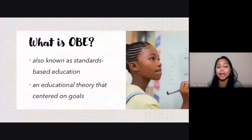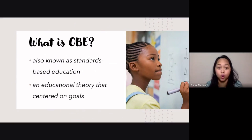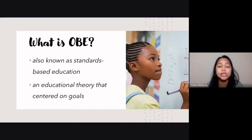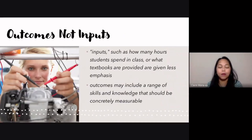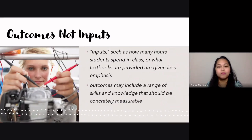We start with its meaning — what actually is OBE? OBE, or outcome-based education, is also known as standards-based education. It is a theory centered on outcomes or goals, which means we are shifting our focus. We are no longer focused on trying to finish everything for the entire school year. Instead, our focus is that students should reach the goals or outcomes we have set for them. One very important characteristic of OBE is that it is focused on outcomes and not inputs. Inputs include things like how many hours students spend in class, what textbooks are provided, what technology is used in the classroom, or what teaching strategies and techniques are incorporated.